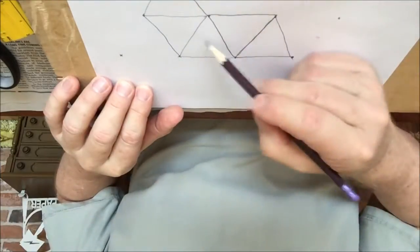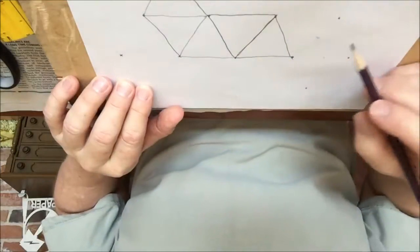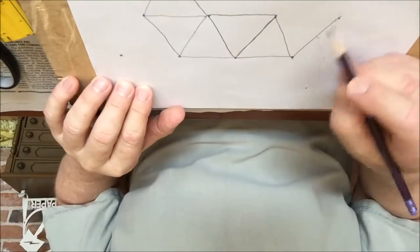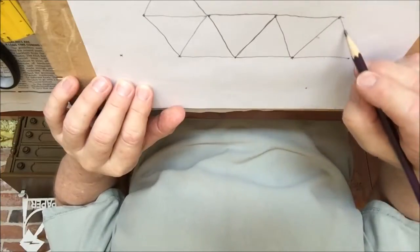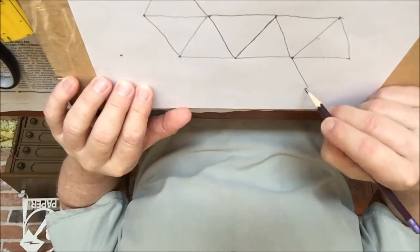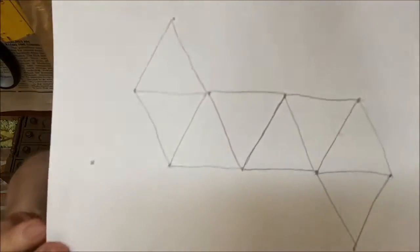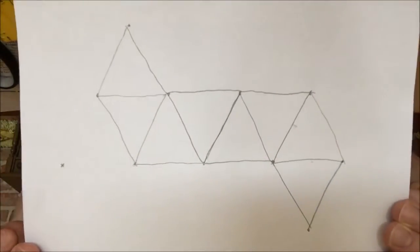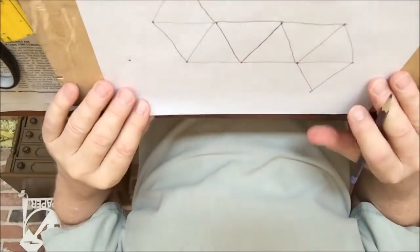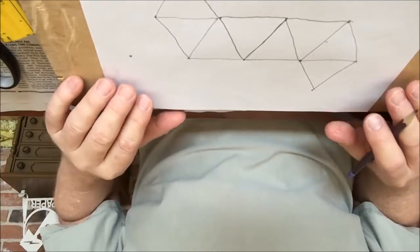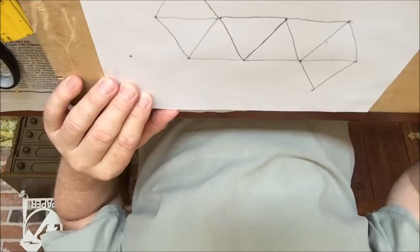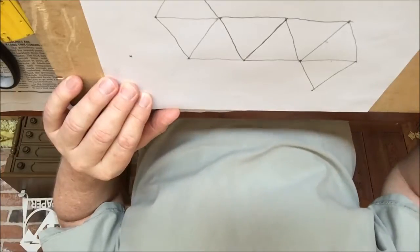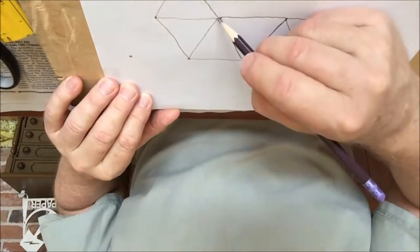These four will form a pyramid, and these four will form a pyramid. Now, to keep the octahedron closed, we need to add two flaps to connect the pyramids.